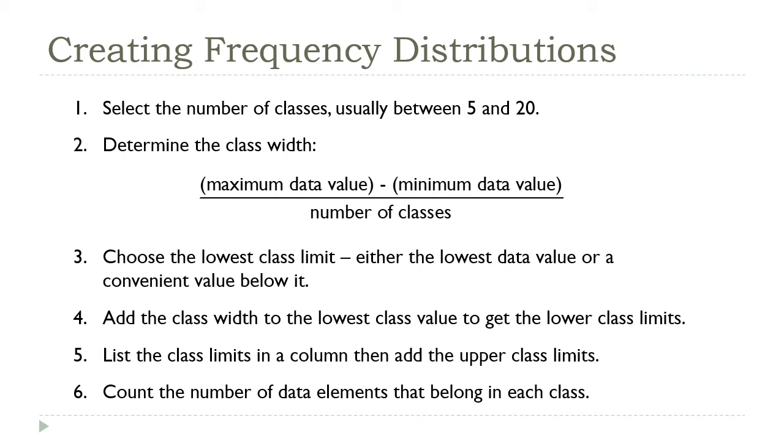So to determine the class width, you just divide the width of the data. That's the maximum value minus the minimum one. You divide that evenly into however many classes you chose. All right, so the safest choice for the first lower class limit is going to be the smallest data value.